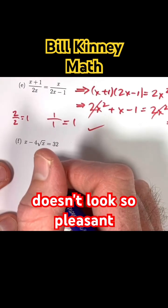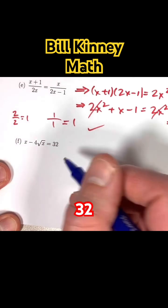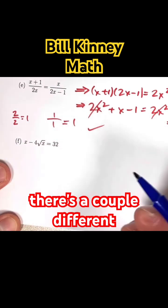Oh, f doesn't look so pleasant. x minus 4 times square root of x equals 32. How do you deal with the square root? There's a couple different things you could try.